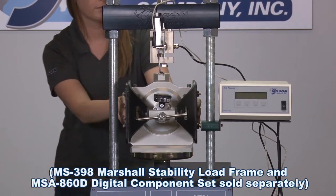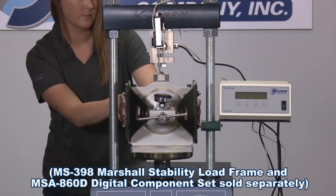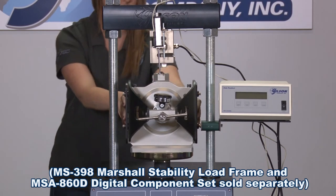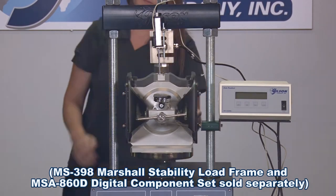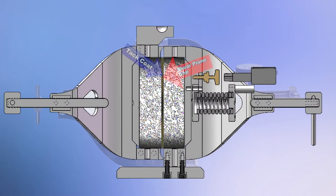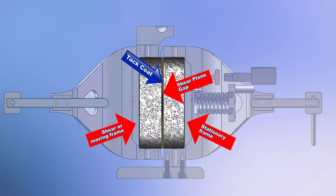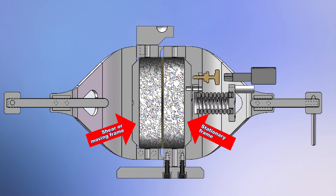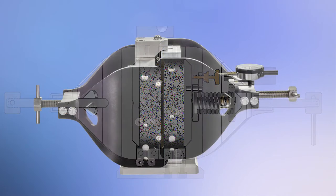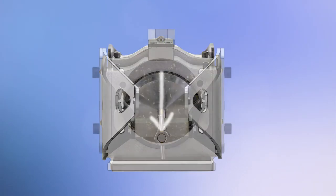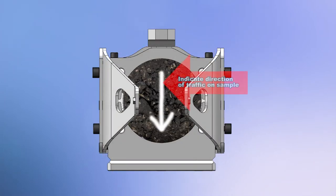To conduct the test, laboratory fabricated or field recovered core specimens are prepared in accordance with test specifications, and then mounted in the apparatus so that the tack coat inner layer is positioned in the center of the shear plane gap between the moving and stationary frames. When using field extracted cores, the direction of traffic should be indicated on the sample.